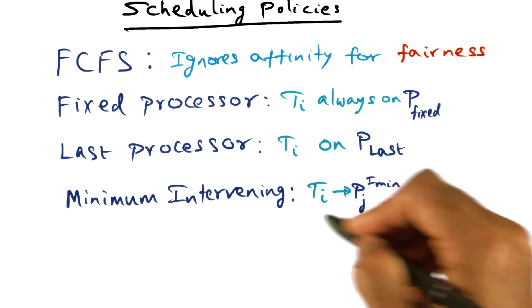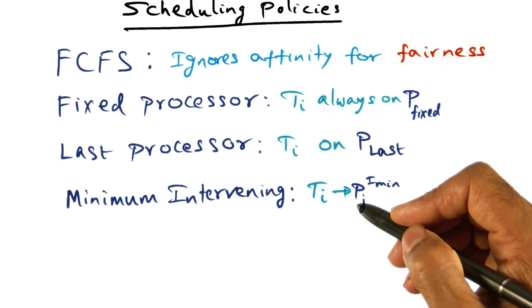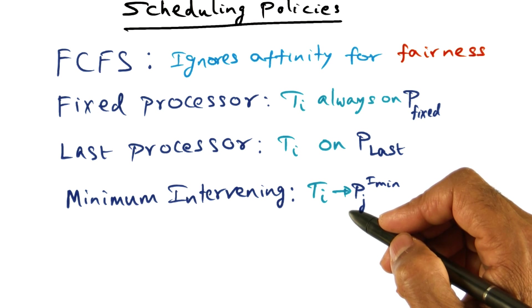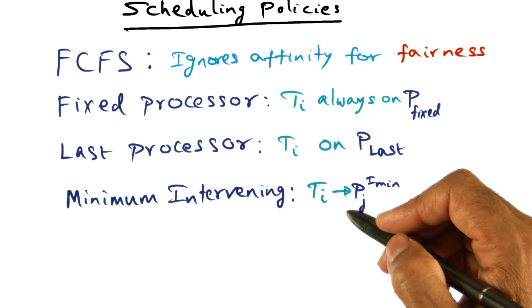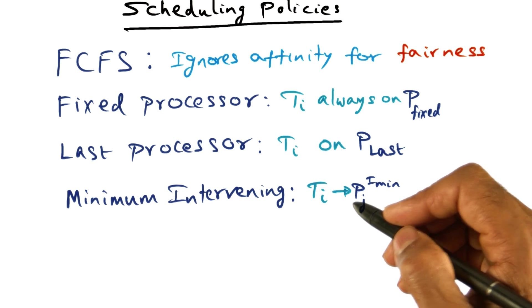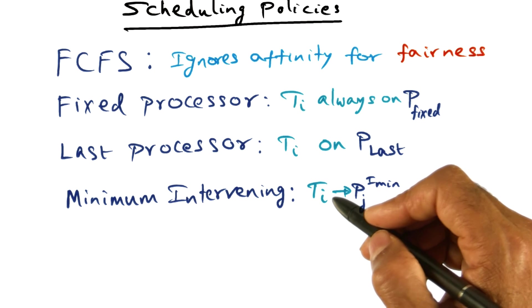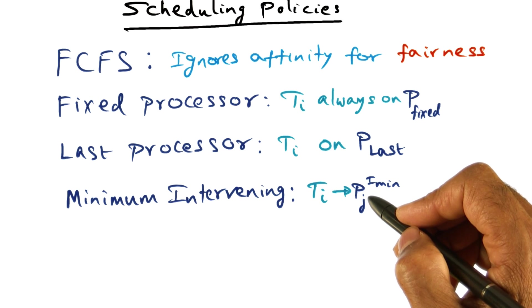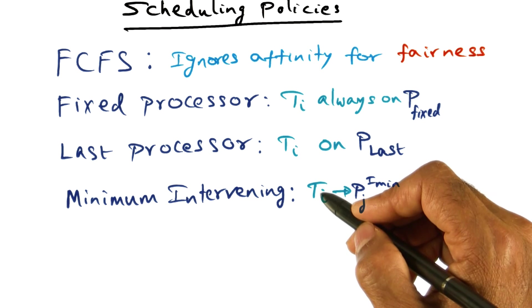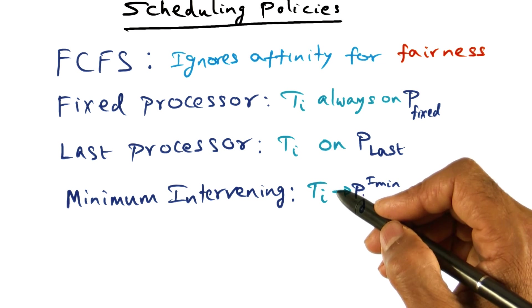The next scheduling policy is what is called Minimum Intervening scheduling policy, MI for short. And in MI, what we're going to do is the following: we're going to keep for every thread its affinity with respect to a particular processor, and pick the processor for running this thread in which this thread has the highest affinity.